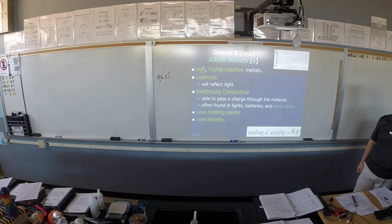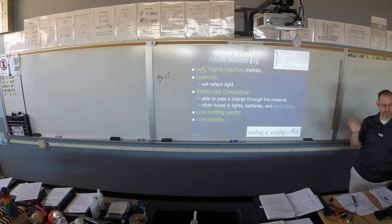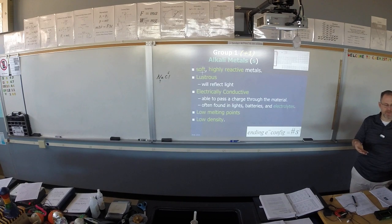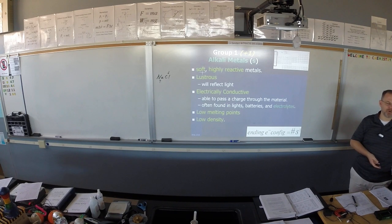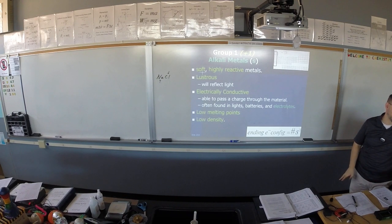Student question: why would it react with things that don't help it make an octet? Because it has that outer electron which it really wants to get rid of — so if given the opportunity to get rid of that outer electron, it will take it, even with things that don't appear to want another electron. Atoms always want more electrons. Basically, another atom with a higher electronegativity will take that electron away, and almost everything has a higher electronegativity than the alkali metals.